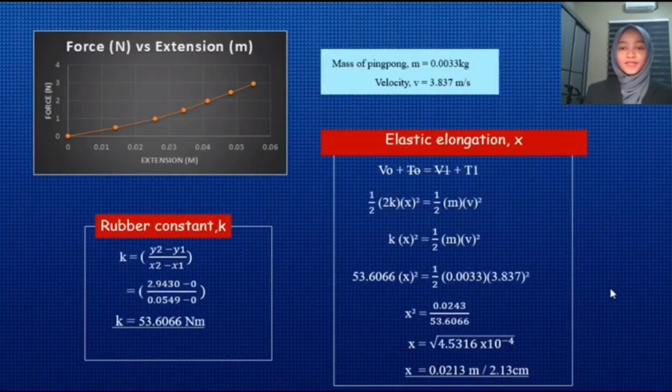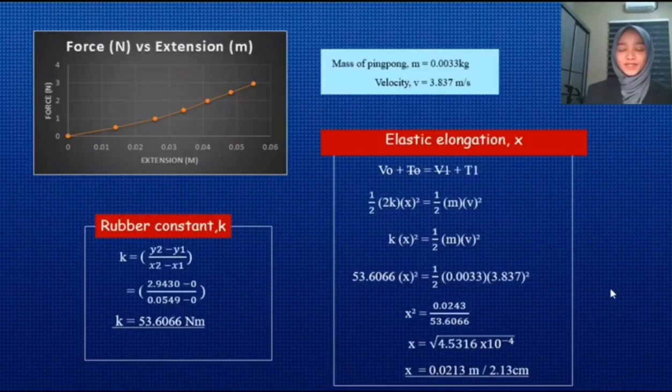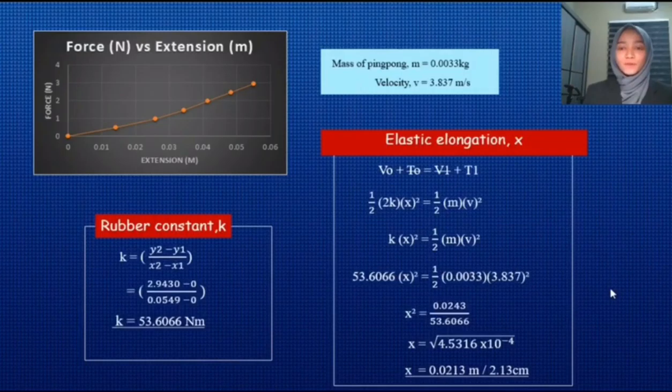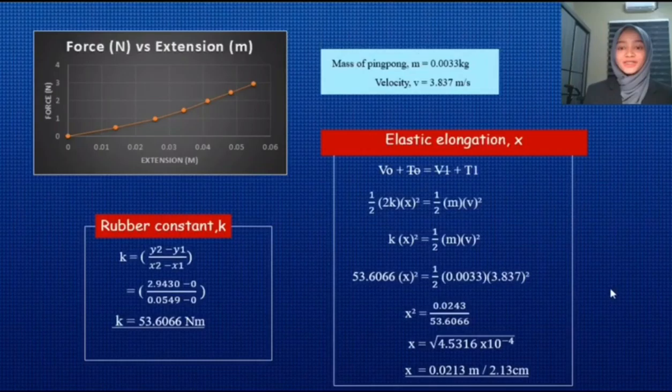And lastly, we are going to find the elastic elongation of the rubber. To find this elongation, we use energy equation which is V0 plus T0 equal to V1 plus T1. We can just cancel out T0 and V1 because there is no effect in initial kinetic energy and final potential energy. We put 2K because we use 2 rubbers. And then we substitute mass of ping pong which is 0.0033 kg and velocity that we get from the previous calculation which is 3.837 into the formula. So we get the value of X is 0.0213 meter or 2.13 cm. That's all for me. I will pass to the next presenter. Thank you.